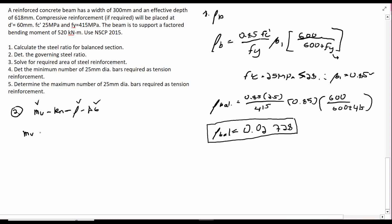M_u is given, we can solve for R_n. And for number 3, we can solve for A_s. Given that our M_u is 520, R_n is M_u over Phi BD squared. So 520, convert this to Newton-mm times 10 to the 6th all over Phi is 0.9 for flexure design. Our B is 300 and effective depth is 618 squared. Our value for R_n will be 5.0427 Newton per mm squared.